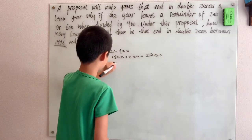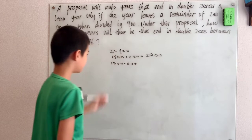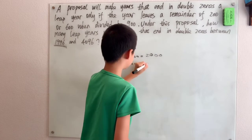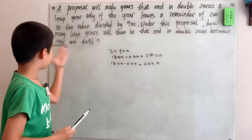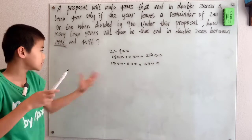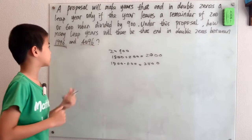1800 added on to 600 gives us 2400, and it is in the range. We can keep going like this until we get to the limit, which is 4096.